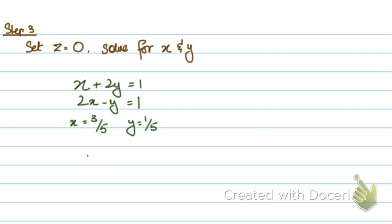So, you get a point on the line, which is 3 upon 5, 1 upon 5, and 0. That's step 3. You set any one of the three variables as 0, solve for the other two variables and you get a fixed point on the line.